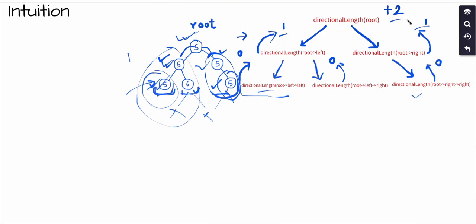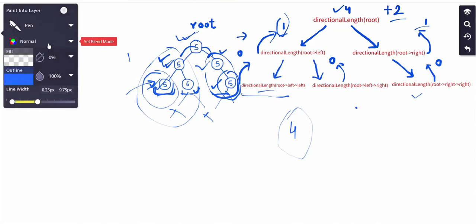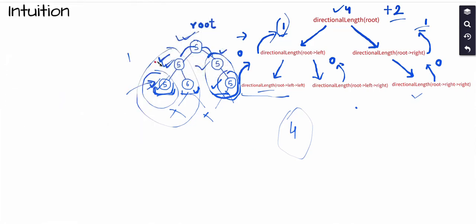Out of all computed values, 4 is the largest and hence is the answer — the longest univalue path in this binary tree. This path passes through the root. The recursive solution uses a base case when we reach a leaf node, returning 0, and the function returns the length of the univalue path in the subtree of the given node.